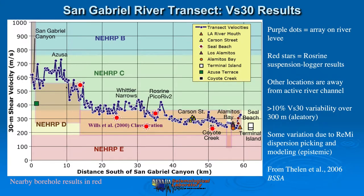From the mountains on the left to the beach on the right, there's at least 10% VS-30 variability in the purple dots, which are the array measurements on the engineered levee at the edge of the river. It correlates pretty well with other locations away from the river, and there are some locations where velocities are a bit lower. About the same story appears when comparing VS-30s from our transect versus values from Ross-Rhein boreholes, shown as bright red stars.